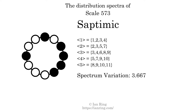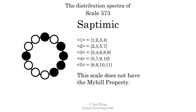The spectrum variation is the sum of all the widths, divided by the number of tones. The spectrum variation of this scale is 3.667. Since the variation is greater than 0, this indicates that the scale is not perfectly even. The highest spectrum width is 6. Since this is greater than 1, we know that this scale is not maximally even. If every spectrum has exactly two specific intervals, we call that the Myhill property. This scale does not have the Myhill property. Since the generic interval ranges overlap, this scale is an improper scale.